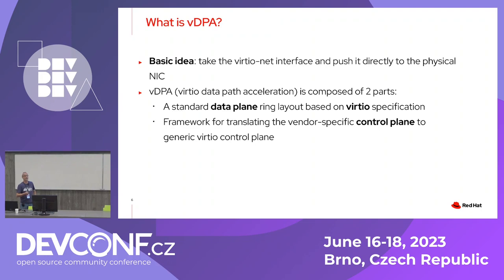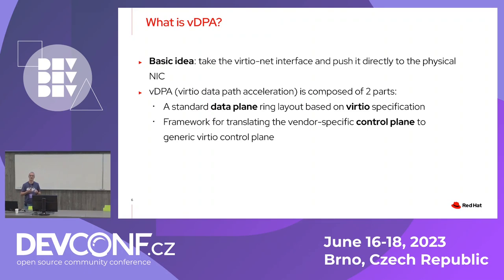VDPA stands for Virtual Data Path Acceleration. The basic idea is to take the VirtIO net interface and push it directly to the physical link. There are two main aspects of VirtIO: the data plane, which follows the VirtIO specification and is standard, and the control plane, which is vendor-specific. For this reason, it is translated by a shim layer called the VDPA framework that converts it to a generic control plane.